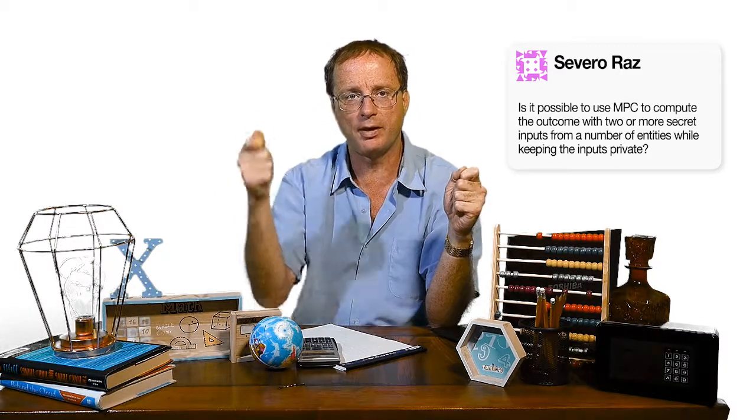And then what you do is you engage in a protocol, which means you talk to each other, but at no point do you actually reveal your secret here, the number two, or your secret here, the number three. But at the end, you output the value of the function you're trying to compute. And that's what multi-party computation does.